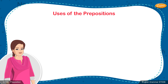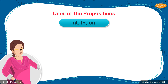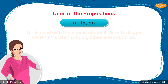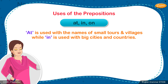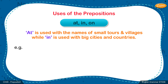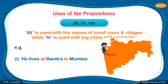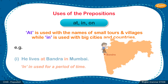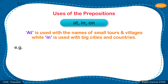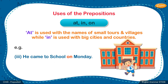Uses of the preposition: The first on our list are At, In, On. Always remember, students: 'at' is used with the names of small towns and villages, while 'in' is used with big cities and countries. Example A: He lives at Bandra in Mumbai. 'In' is used for a period of time. Example: We shall leave at 4 o'clock in the morning. 'On' is used with particular dates and days. Example: He came to school on Monday.